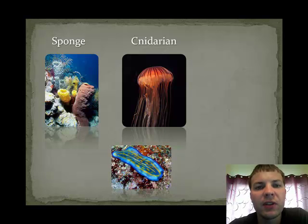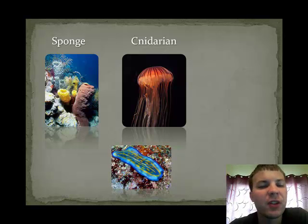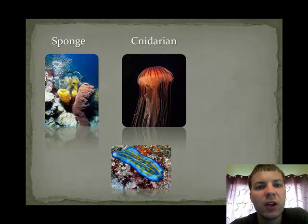The second group is the cnidarians, and the most familiar example of a cnidarian is the jellyfish. Jellyfish can range in size from the size of a quarter to very large jellyfish, such as the Man of War, which can be 20 to 30 pounds.